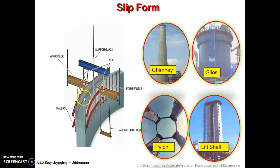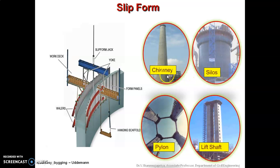Slip form construction offers high-quality surfaces and produces a continuous, monolithic structure. It can be used for both vertical and horizontal structures. Vertical slip forming is used for silos, chimneys, bins, caissons, and bridge piers, while horizontal slip forming is used for canal linings, tunnel inverts, highway pavements, and water channels.